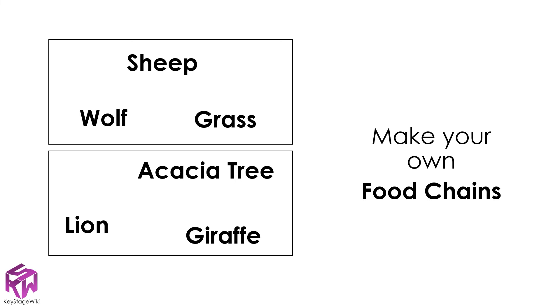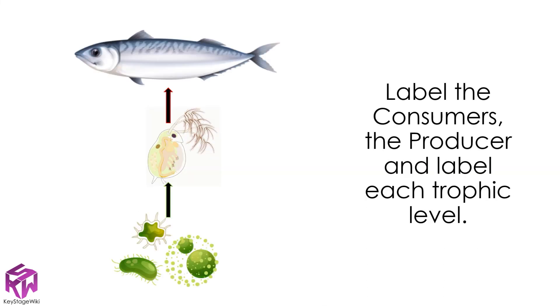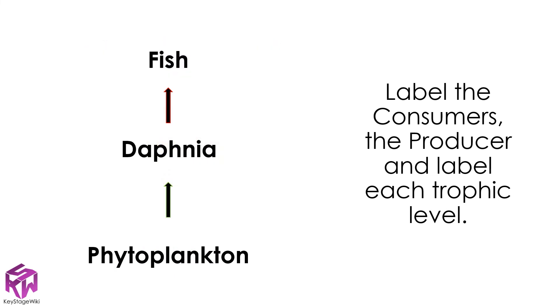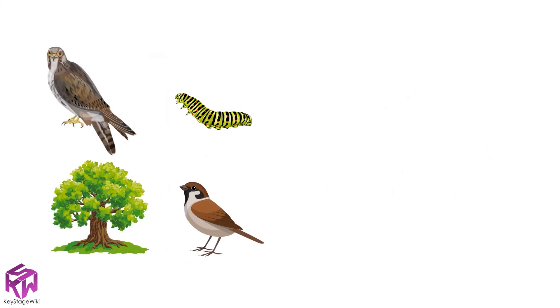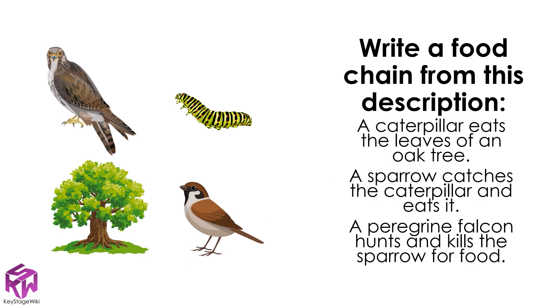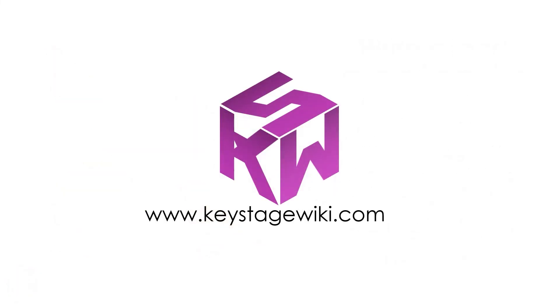The answers to the following questions are shown at the end of the video. See if you can write your own two food chains using these organisms — pause the video now to give it a try. Write this food chain out and then add labels including the different consumers, the producer, and a label for each trophic level — pause the video. Sometimes a biologist might observe organisms consuming one another — use this description to write your own food chain. For more information on food chains visit keystagewiki.com, and for further videos like this, like and subscribe to the channel.